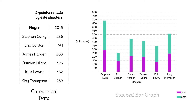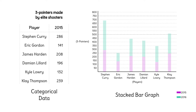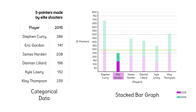This is a stacked bar graph. So who's the third best? James Harden. Which player scored less in both seasons than Steph Curry did in just 2015? Eric Gordon.